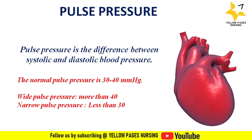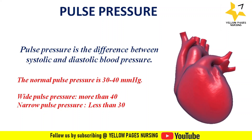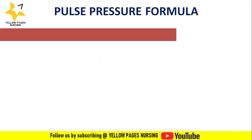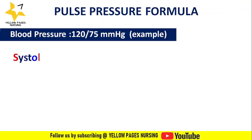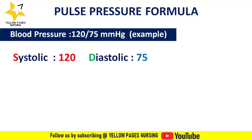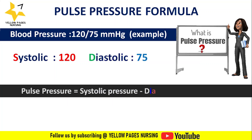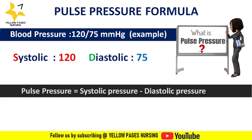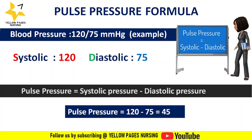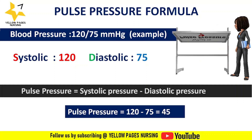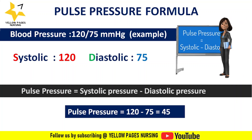To calculate pulse pressure, the formula is: pulse pressure = systolic pressure − diastolic pressure. For example, if the blood pressure reading is 120/75 mmHg, the systolic is 120 and diastolic is 75, so the pulse pressure is 45.